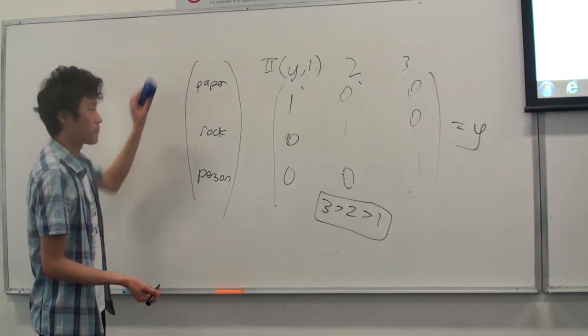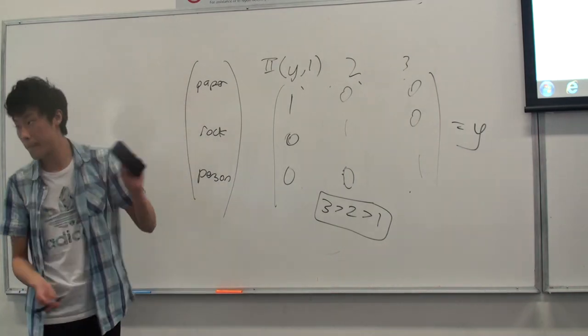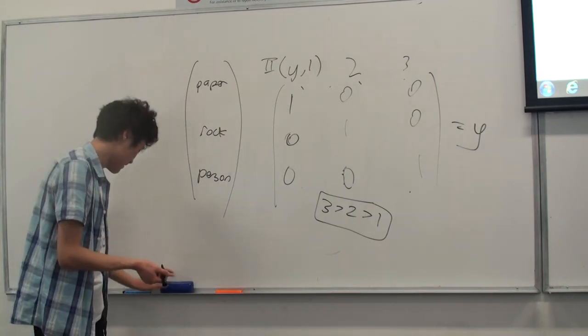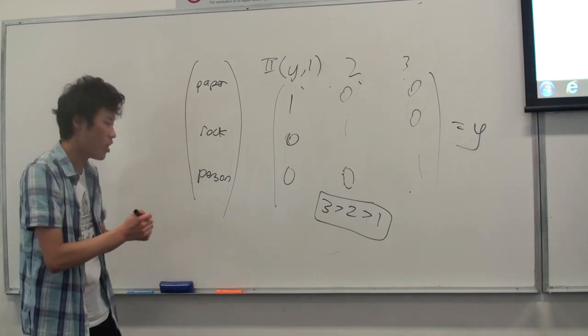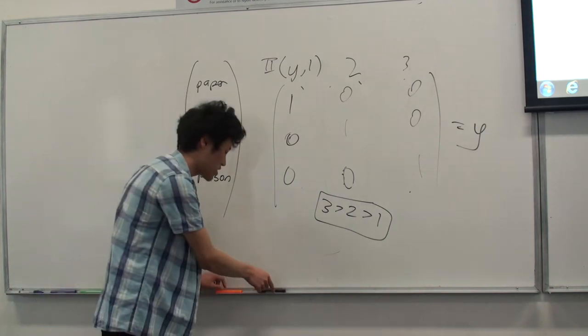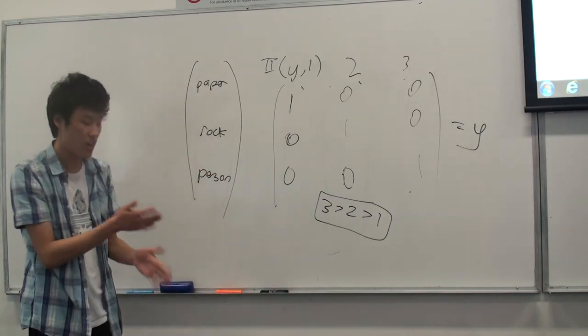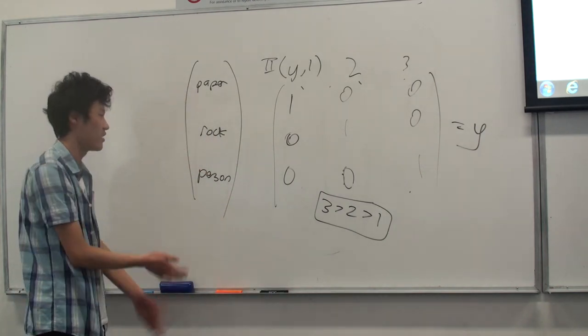This is also called one-hot encoding. In maths they call it dummification.